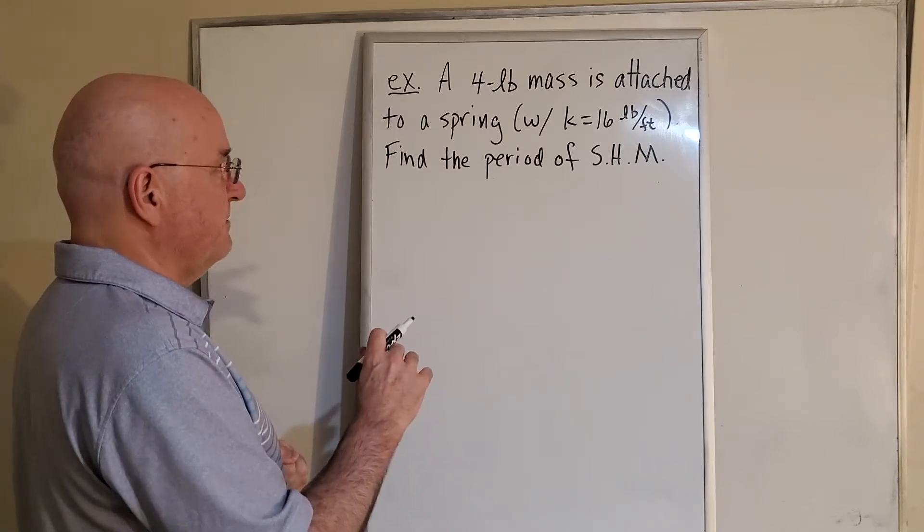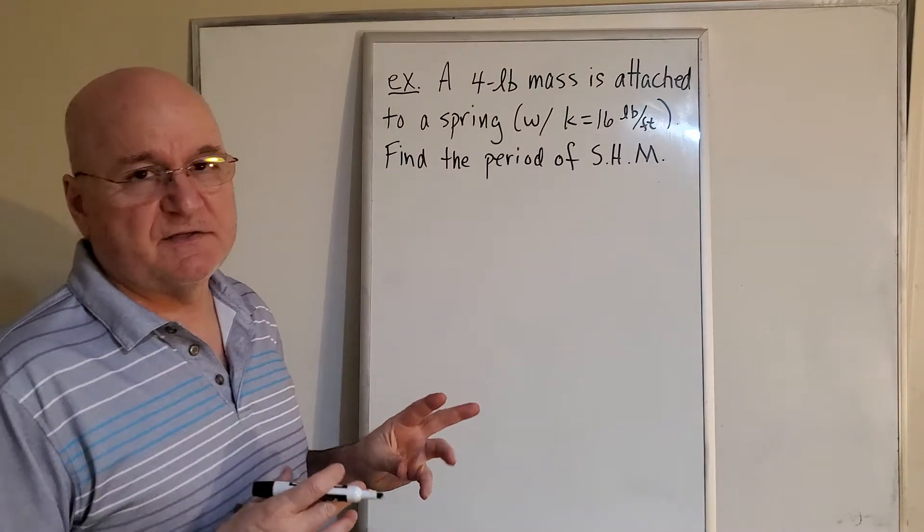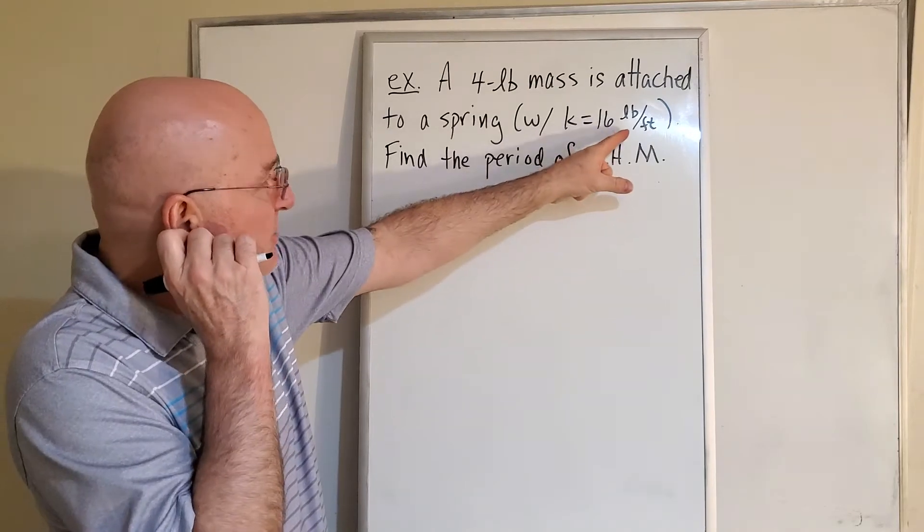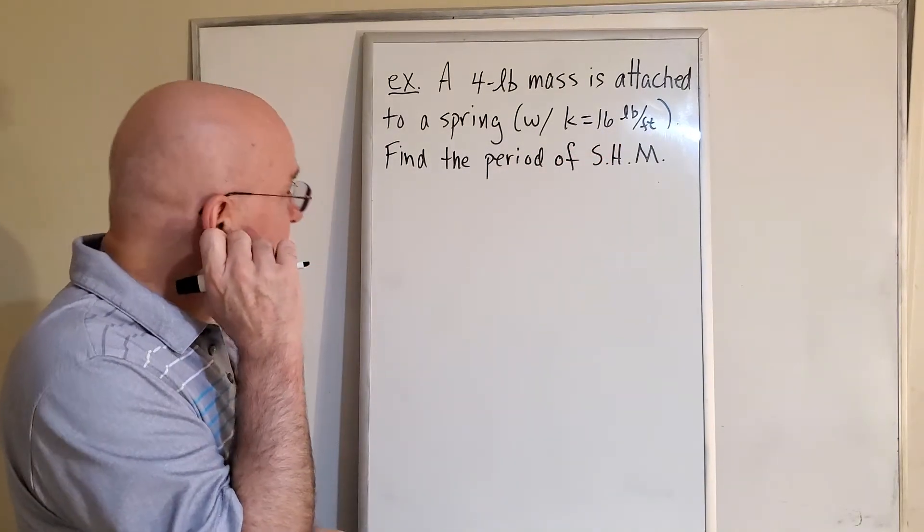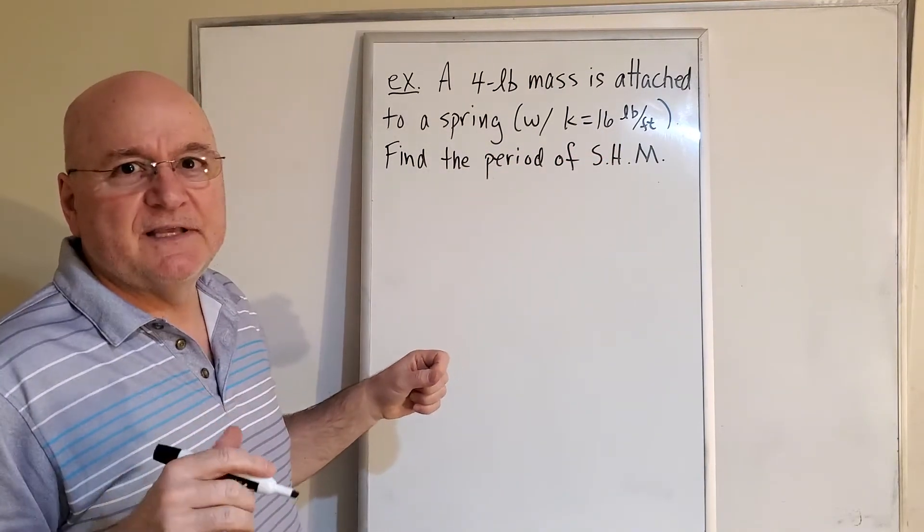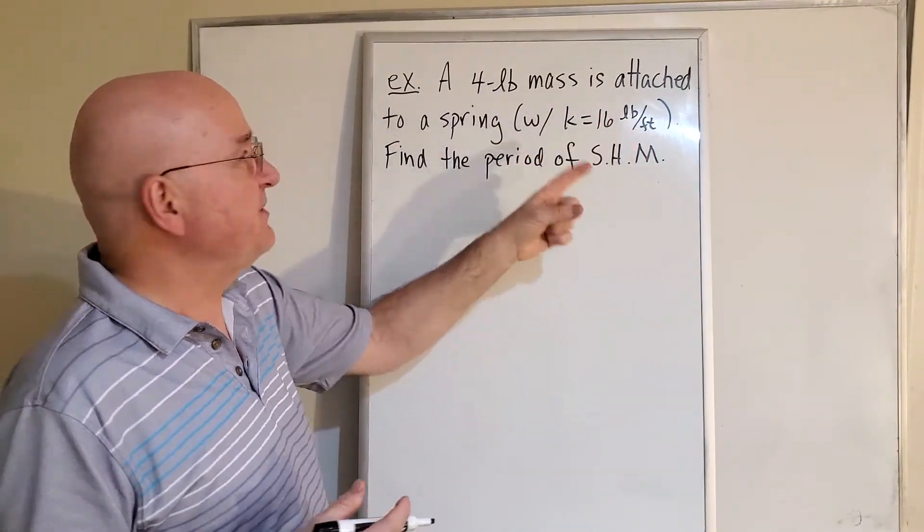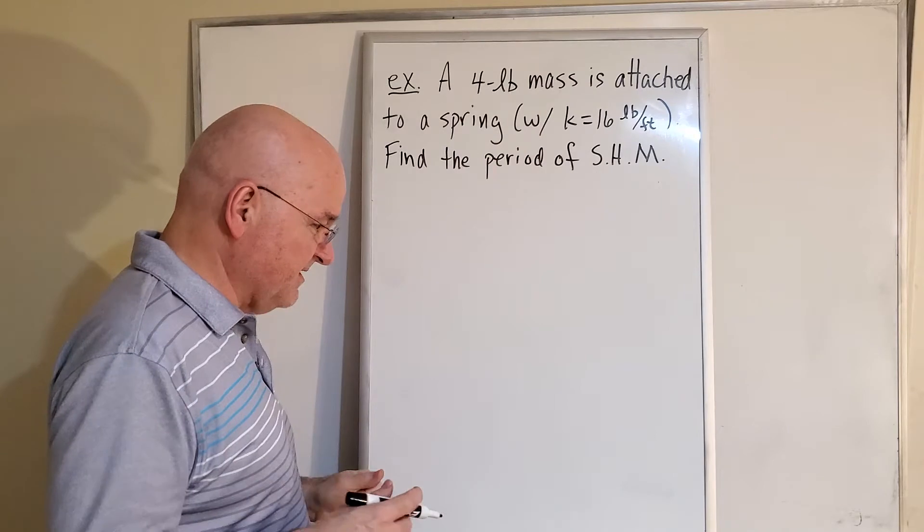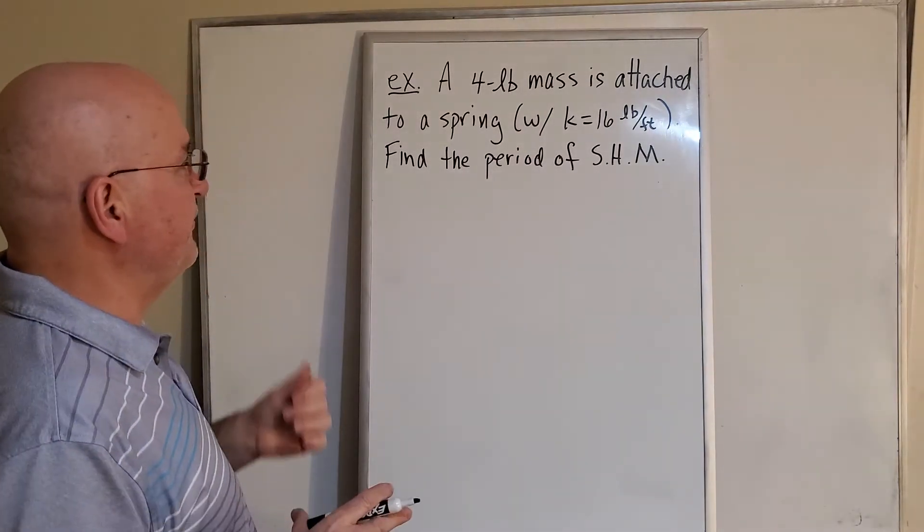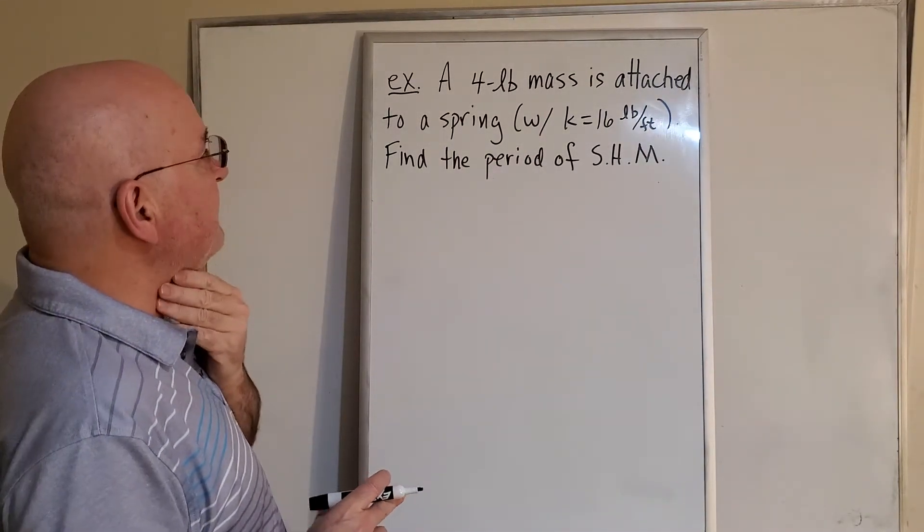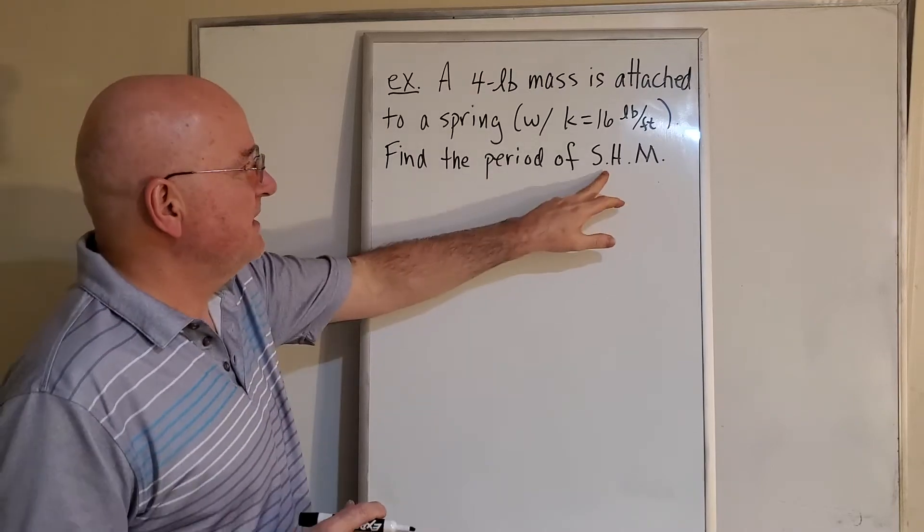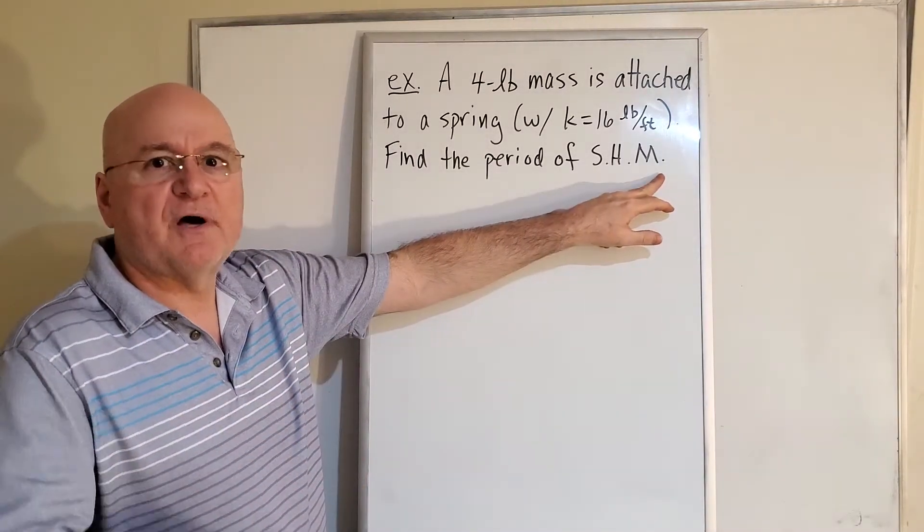attached to a spring with spring constant 16 pounds per foot. In your homework it won't usually say k equals, it'll say the spring constant is 16 pounds per foot. Find the period of SHM, simple harmonic motion.